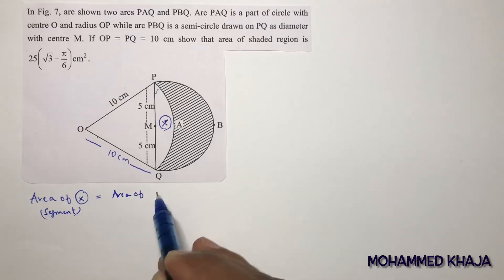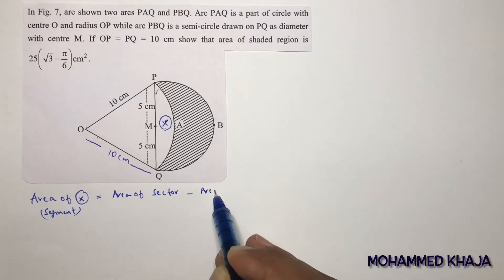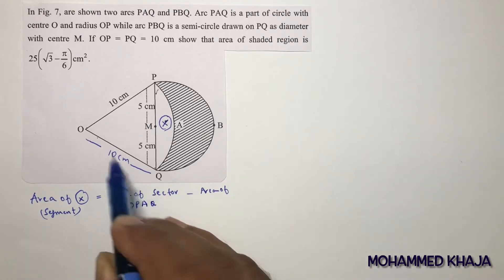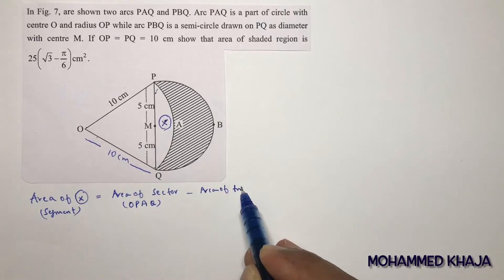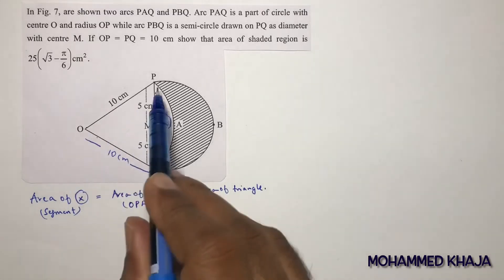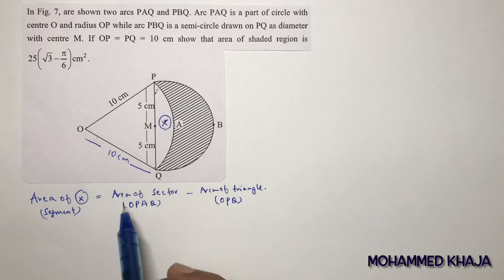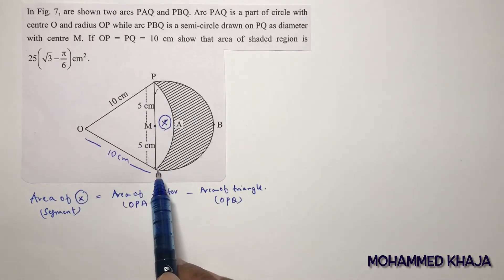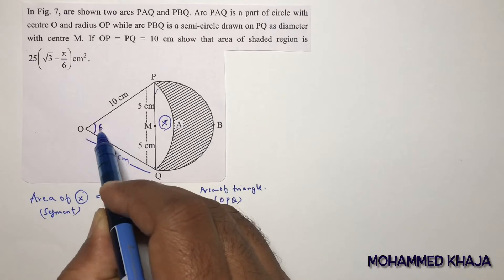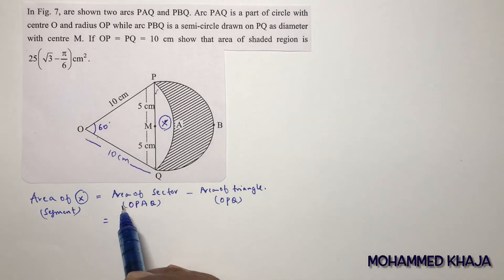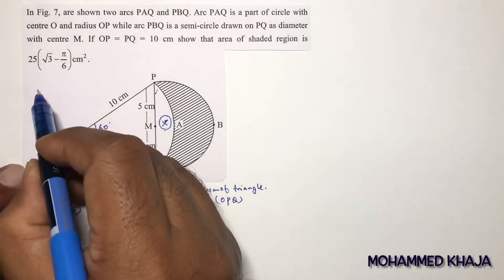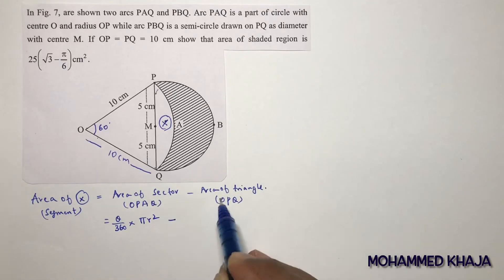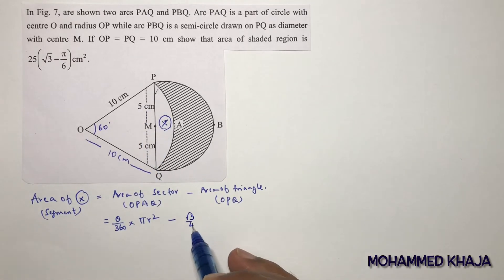The area of segment X equals the area of sector OPAQ minus the area of triangle OPQ. Since all sides are 10 centimeters, it is an equilateral triangle, so the angle is 60 degrees. The formula for area of a sector is (θ/360) × πr², and the area of an equilateral triangle is (√3/4)a².